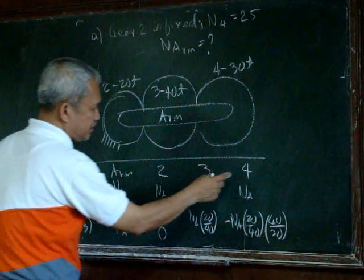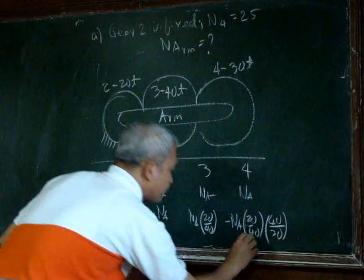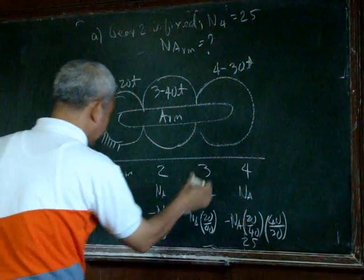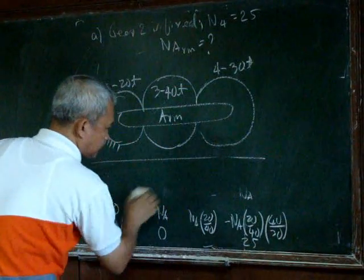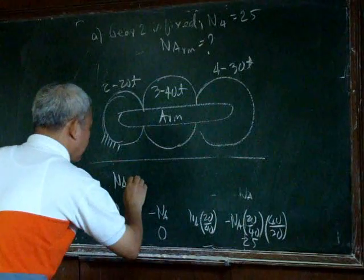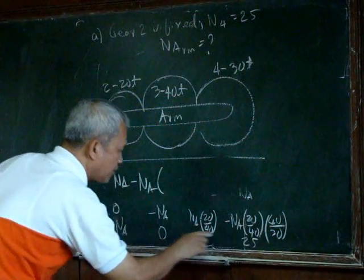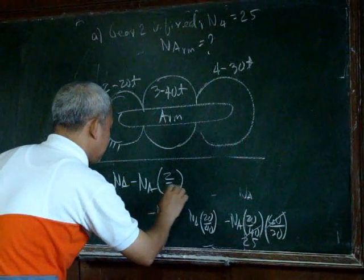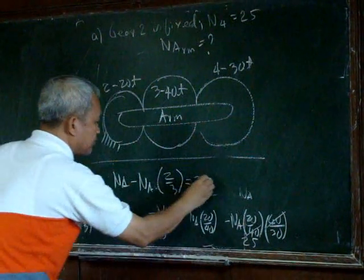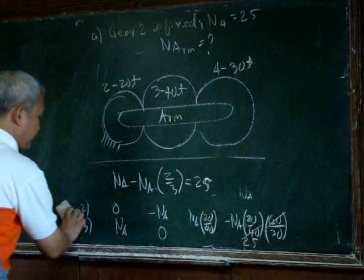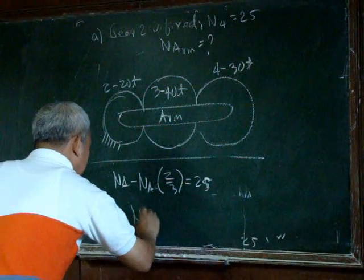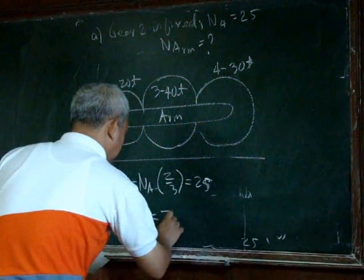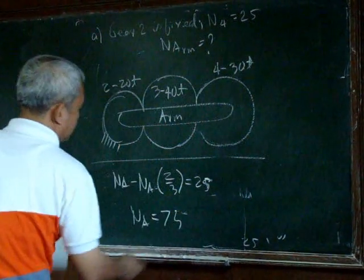So the final rotation of this must be equal to 25. And that means, if we have to solve this, this is Na minus Na multiplied by 2 over 3 is equal to 25. And that means our rotation of the arm is equal to 75.